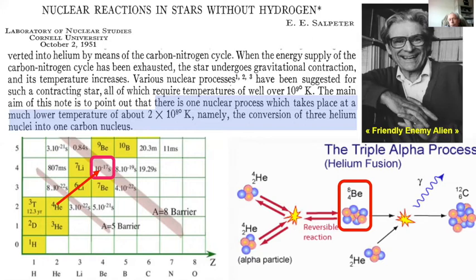Half of this problem was solved by Edwin Salpeter, born in Austria and — being Jewish — emigrated with his parents to Australia in the 1930s before moving to the United States. Salpeter showed that at temperatures of about 200 million degrees the triple-alpha reaction can occur: two helium nuclei form an extremely unstable beryllium-8 nucleus, which normally splits back to two alpha particles in 10⁻¹⁷ seconds, but at sufficiently high density and for a sufficiently long time, some beryllium-8 nuclei can capture a third alpha particle before disintegrating. Salpeter showed the rate was sufficient in red giant cores, but the subsequent capture of helium-4 onto beryllium-8 to form carbon-12 did not seem rapid enough.